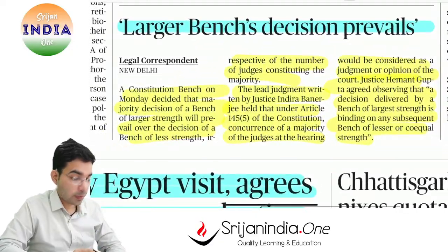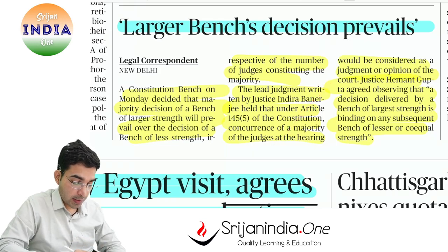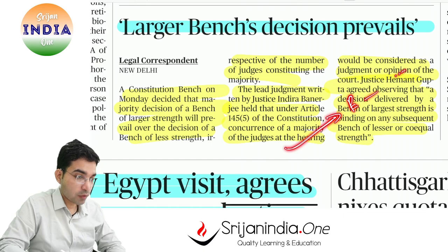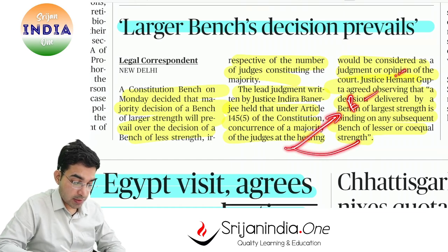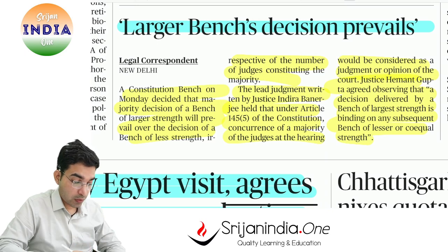Larger bench decision prevails. Supreme Court self-correcting bhi hoti hai. Jaise humne constitution mein padha — ek case mein decision court ne bola ki preamble is not a part of the constitution. Sometime baad ek aur bench aayi usne bola preamble is part of the constitution. Ab yeh jo second bench hai, agar five judge bench hai aur pehli waali teen judge thi, toh is ka decision prevail hoga. Jo badi bench hoti hai uska decision prevail hoga. Aur Supreme Court self-correcting bhi hoti hai.